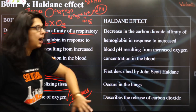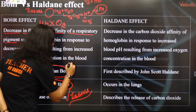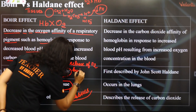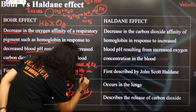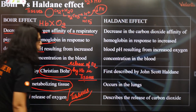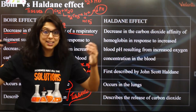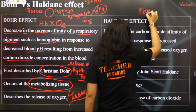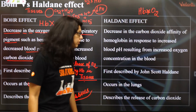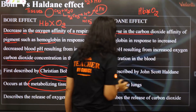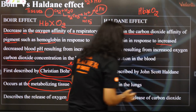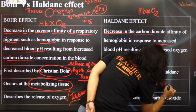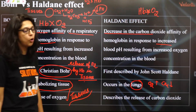Let's come to the Haldane effect. There is release of O2 by hemoglobin in the tissues, but hemoglobin also needs to accept oxygen — it needs to form a friendship with oxygen. So whenever carbon dioxide is low and blood pH is increased, which is what happens in the lungs — oxygen is more, CO2 is less — O2 and hemoglobin will form a bond.